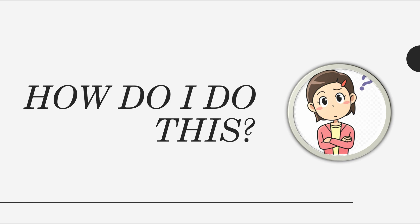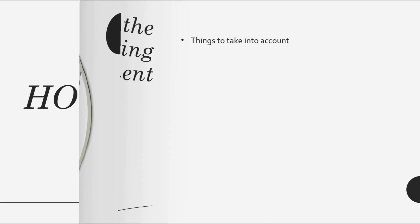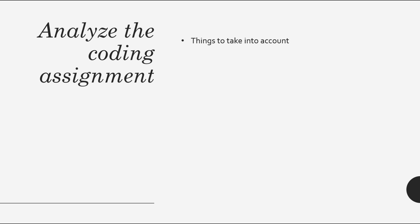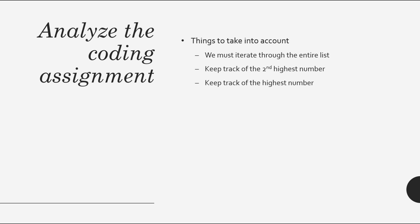So you may be asking yourself, how do we do this? What we need to do is first analyze the coding assignment and break it down. For this particular assignment, there are a couple of things we need to take into account. In order to find the second highest number within an array, we know we must iterate through every element within the list. We also need to keep track of the second highest number and the highest number, to make sure we calculate the proper values upon each iteration of the loop.